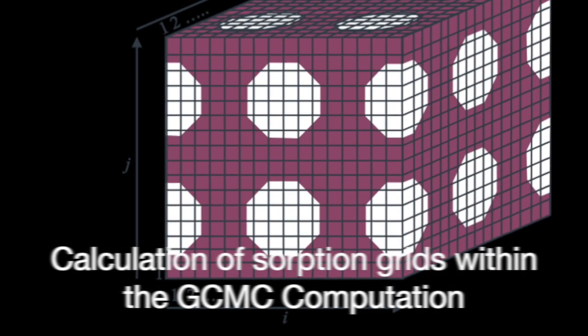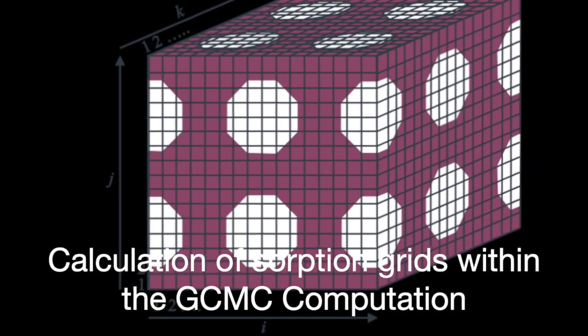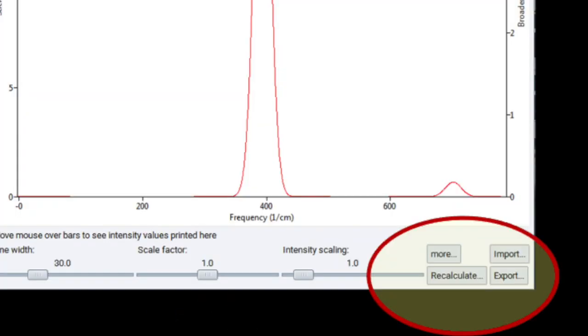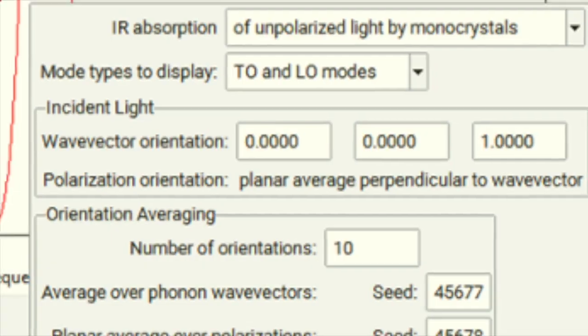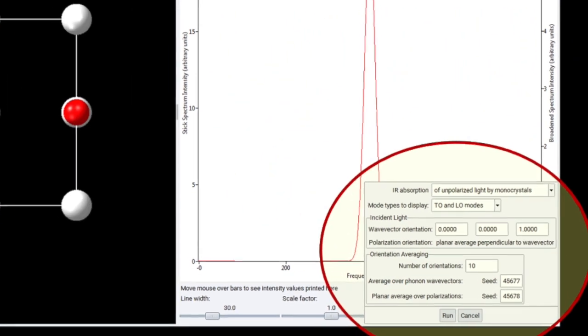The Gibbs engine gains enhancements to the calculation of sorption grids, and the Phonon Property module benefits from enhanced analysis of infrared and Raman spectra and analysis of thermodynamic functions.